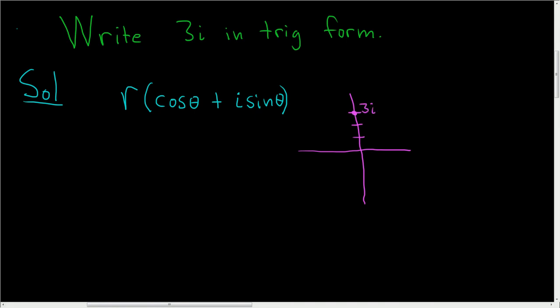In this picture, r is this distance here. So r is going to be equal to 3. And to find theta, we just have to think about the angle. Well, the angle here is pi over 2.